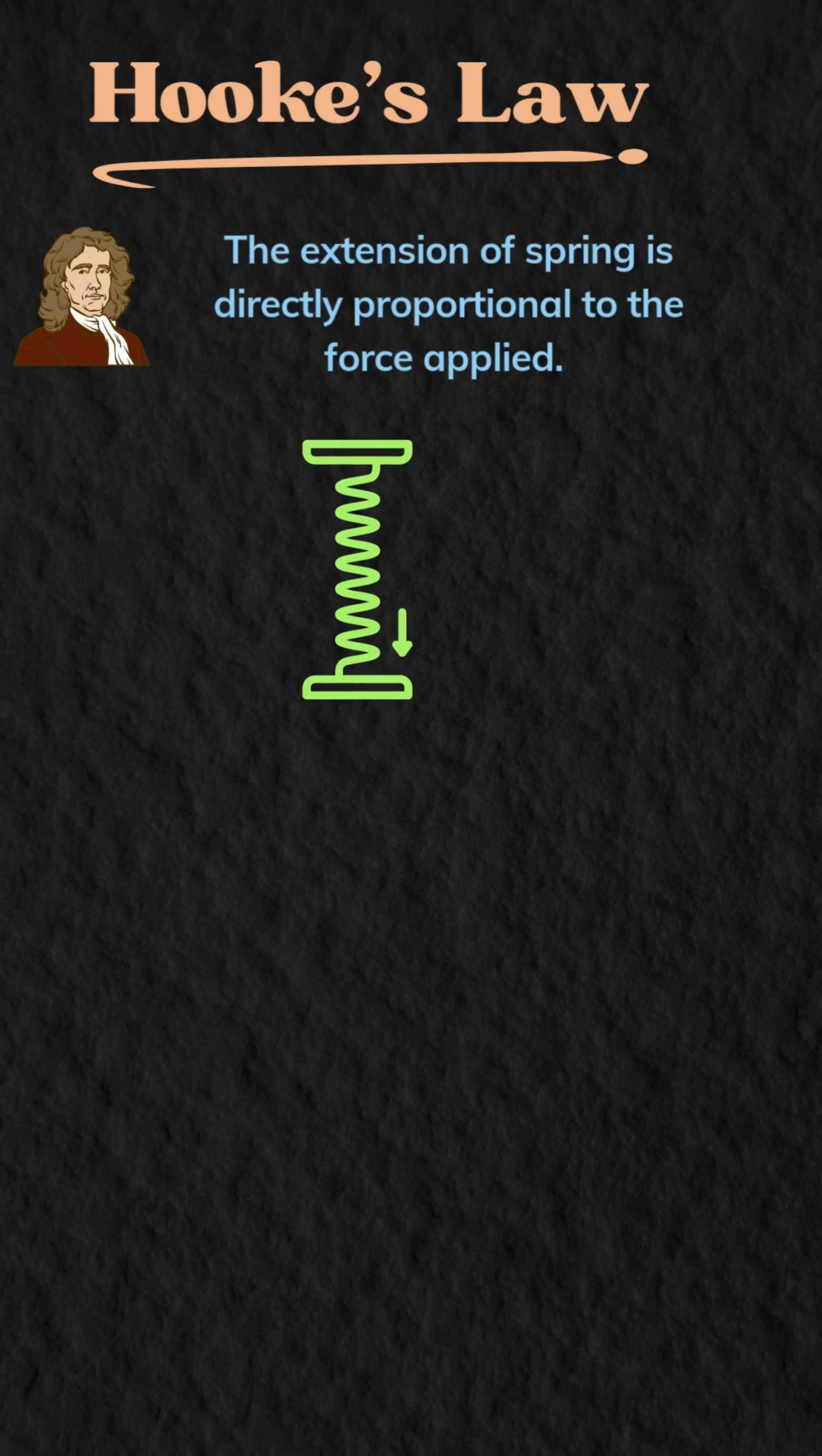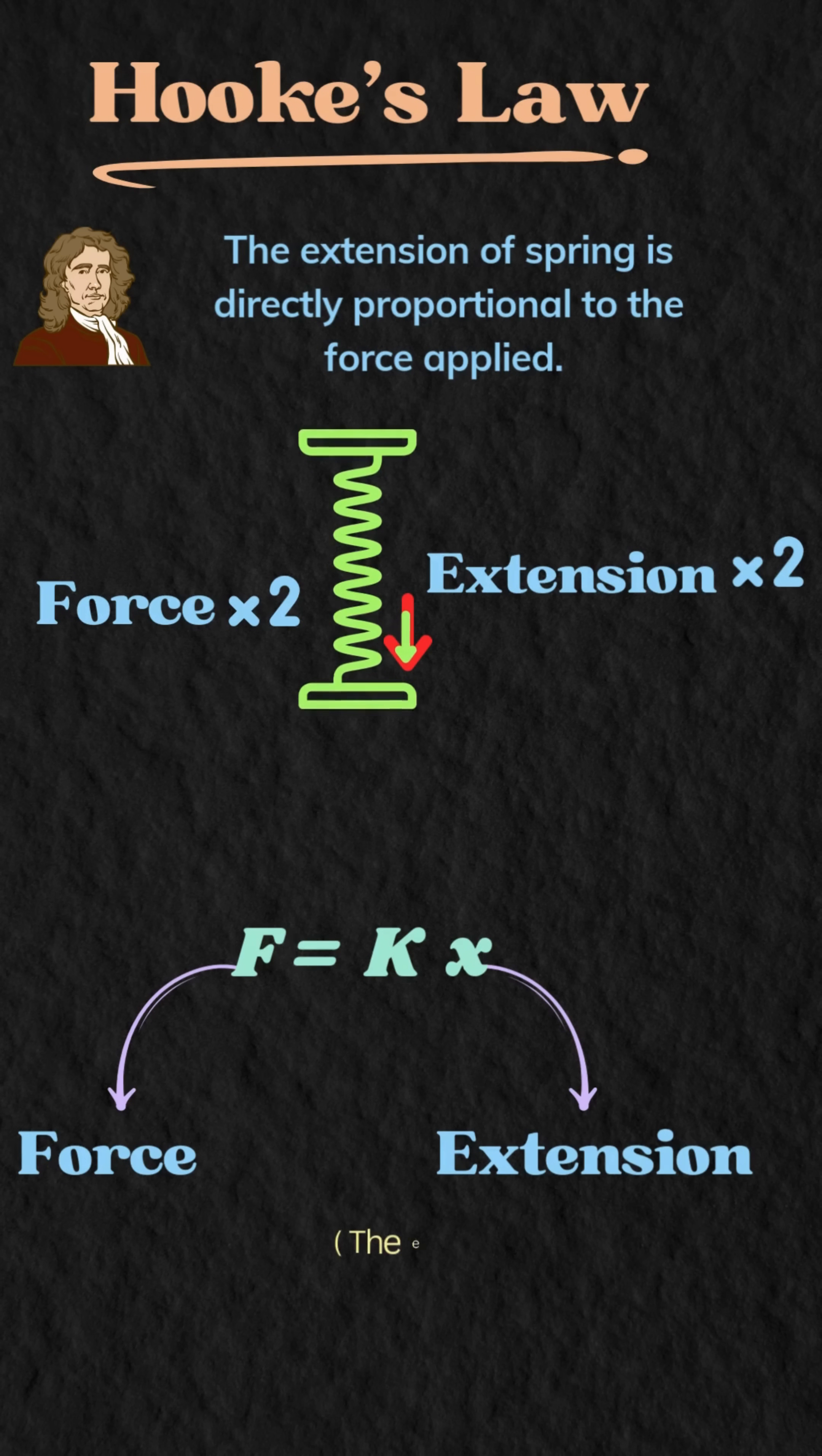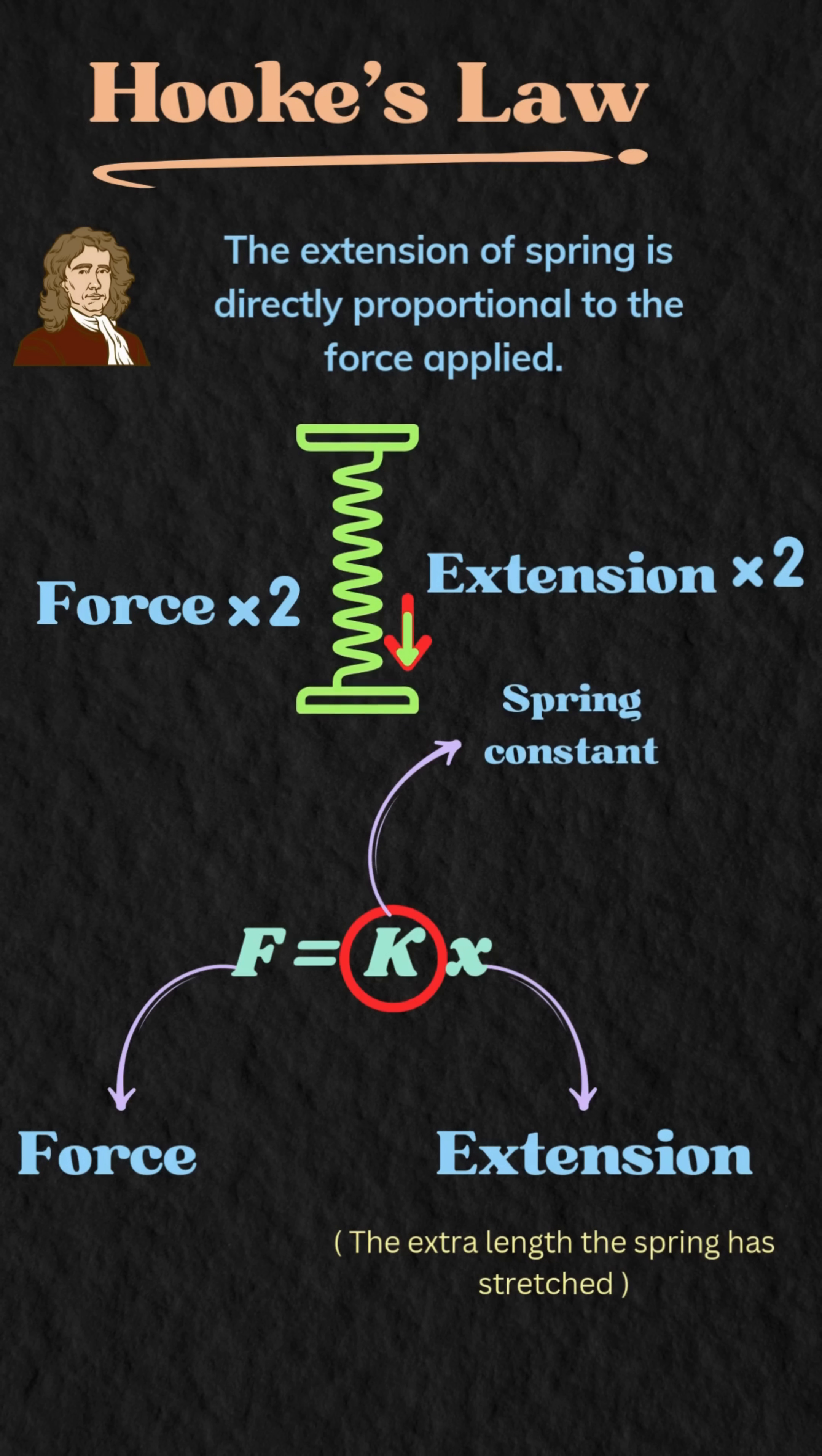In simpler terms, if you double the force, you double the extension. We write it like this: F equals K times X, where F is the force, X is the extension, the extra length the spring has stretched, and K is the spring constant, a number that tells us how stiff the spring is.